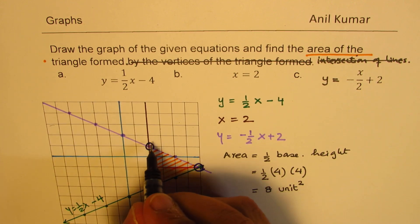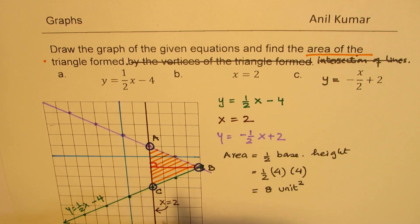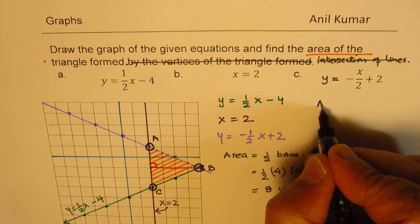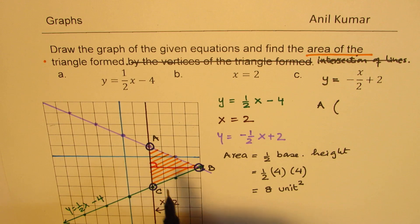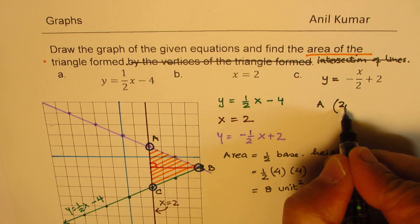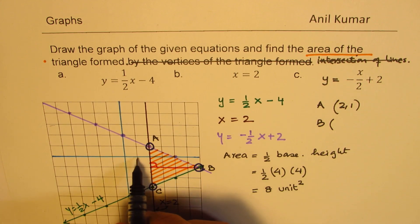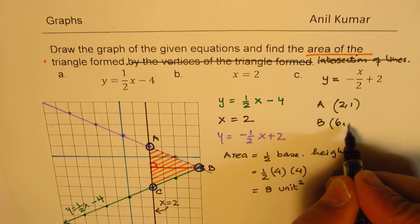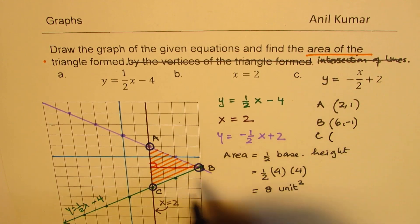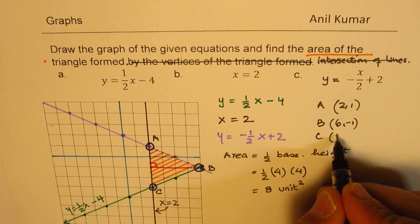You could also write down the values of these points, coordinate points of these intersections. So we can now write here, A is the coordinate value 2, 1. For B, the coordinate value is 2, minus 1. And for C, we get 2, minus 3.